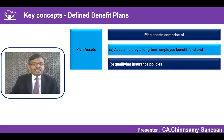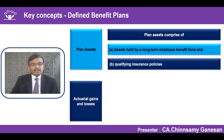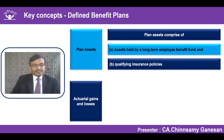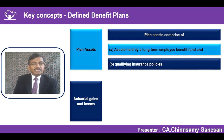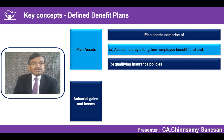Plan assets are the assets created by establishing a fund or insurance policy to meet the defined benefit obligation. Actuarial gains and losses arise when doing the actuarial valuation — assumptions include the expected interest rate at settlement, mortality rate, attrition rate, and increment rate, since the benefit is dependent on last drawn salary.